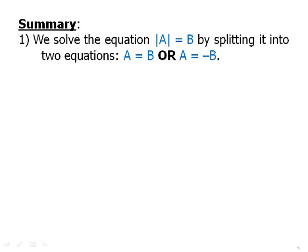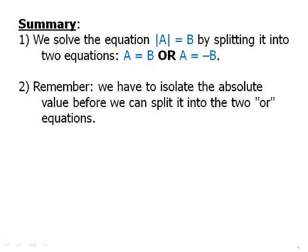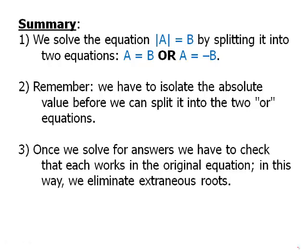In summary: we solve |a| = b by splitting into two equations — a = b or a = -b. We must isolate the absolute value before splitting. Once we solve for answers, we check that each works in the original equation, which eliminates extraneous roots.